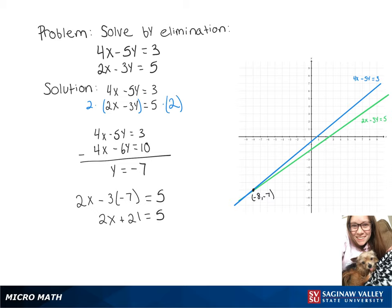After simplifying that, we're left with x equals negative 8. So our solution here is negative 8, negative 7. And as you can see on our graph, that's where our two lines intersect.